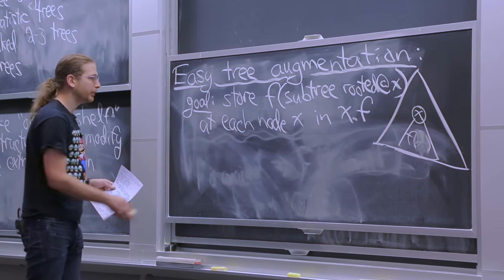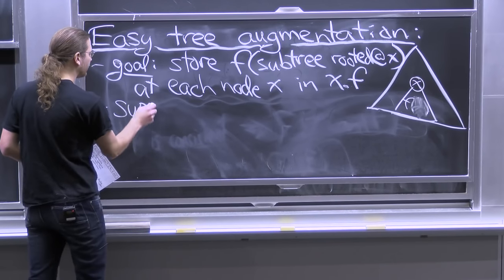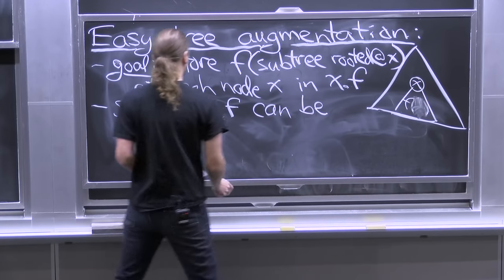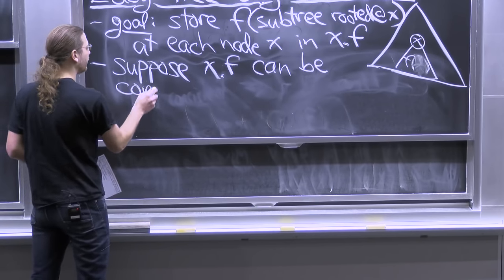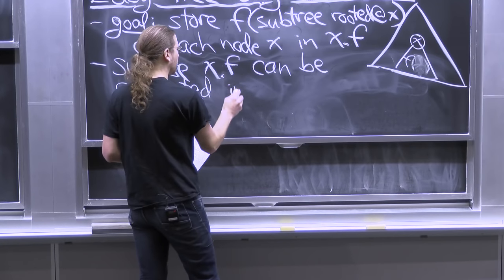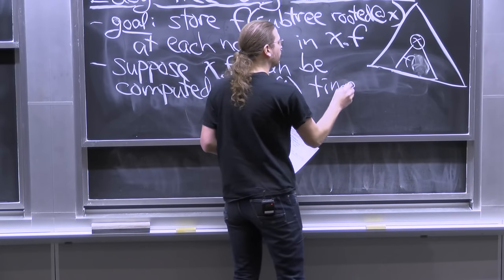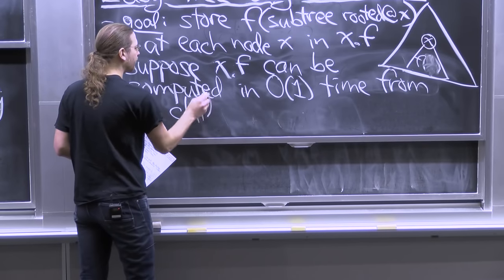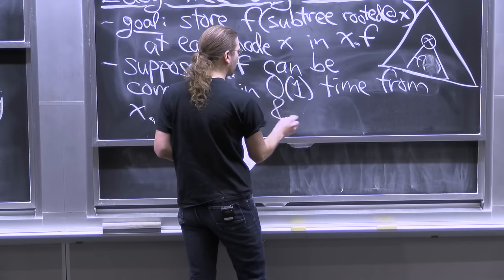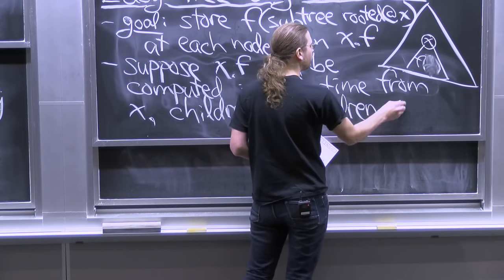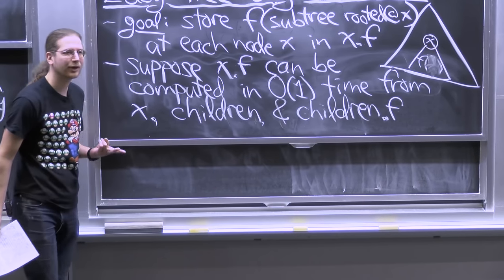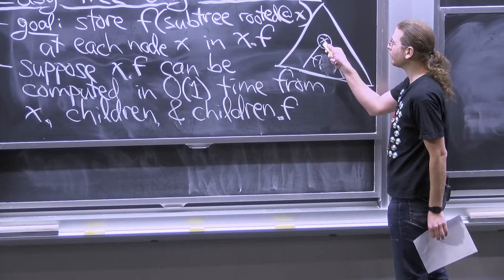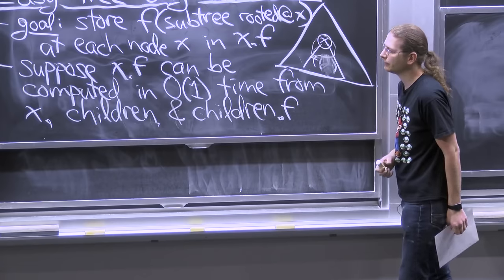This is not always possible, but here's an easy case. Suppose x.f can be computed locally in constant time from information in node x, from x's children, and from the f values stored in the children. If you can compute x.f just given one level down in constant time, then you can update whenever a node changes.